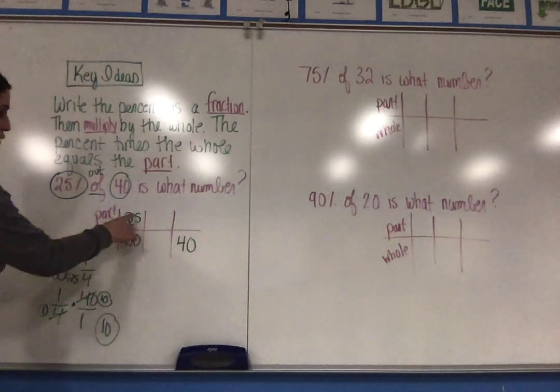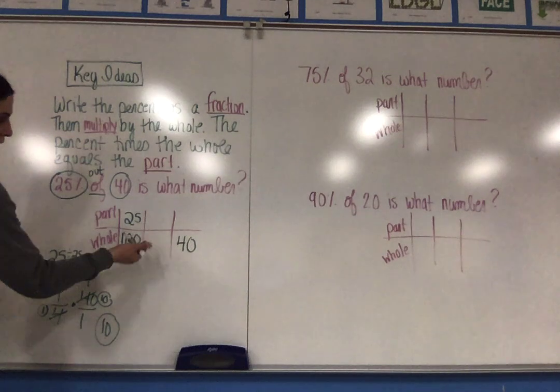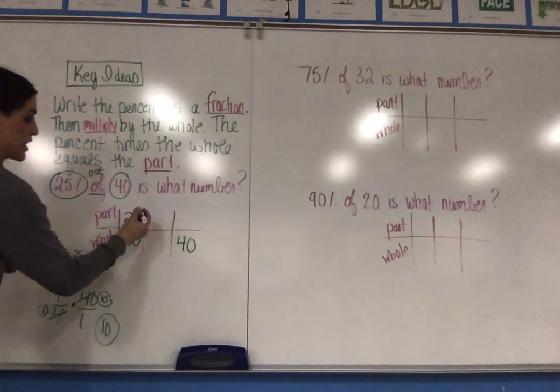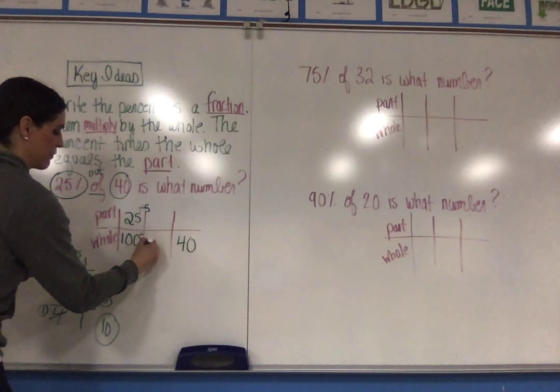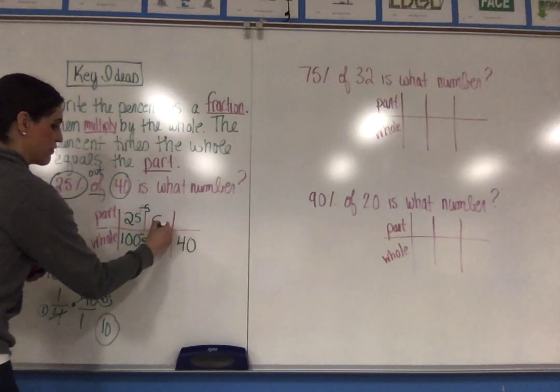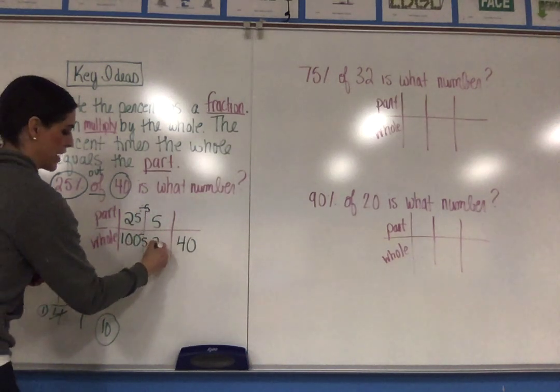So I'm going to look at 25 and 100. And again, I could see that I could divide both of these by 5. So I'm going to divide both of them by 5. 25 divided by 5 is 5. 100 divided by 5 is 20.